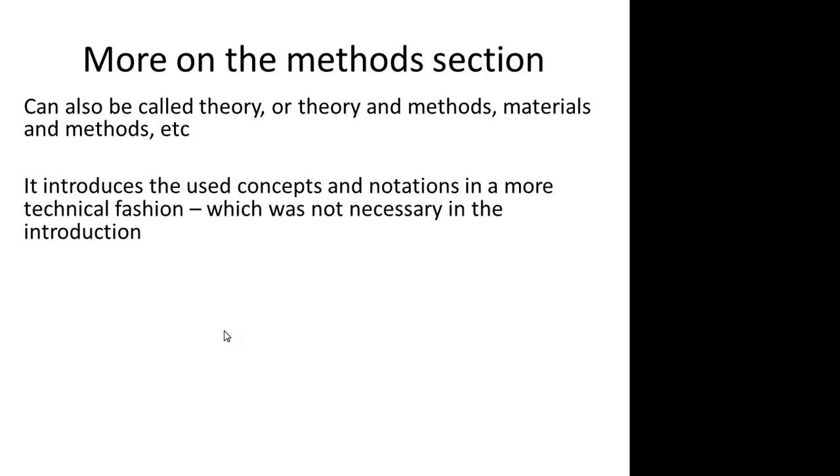Let's look in more detail at these three chapters, starting with the method section. Most of you have some preliminary version of the method section and have already gotten some feedback on it. An initial thing to know is that it's not always called the method section — sometimes it's called the theory section, theory and methods, or materials and methods. There are different names but they all have the same purpose. Depending on how theoretical and experimental your paper is, there are slight variations.